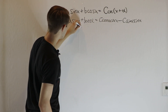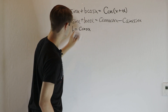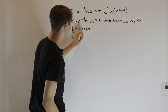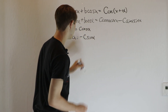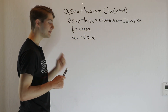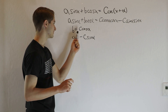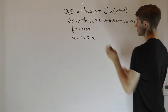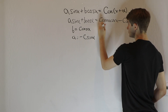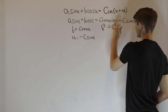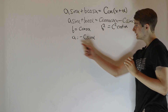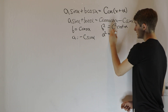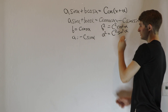So we have b equals c cosine alpha, and then for the sines, we know a equals negative c sine alpha. What we want to do is start out by solving for c. If we square each of these equations, on the top one we get b squared equals c squared cosine squared alpha, and on the bottom one, a squared — the negative squared is a positive — we get c squared sine squared alpha.